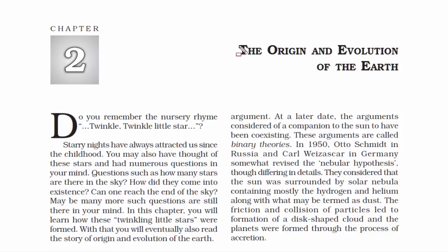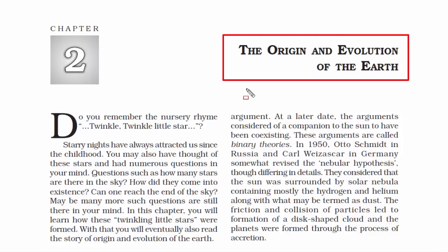This video is about chapter 2, the origin and evolution of Earth. In this chapter we will read about the story of the origin, that is the formation of Earth, and evolution, that is how Earth evolved over time, meaning what were the physical changes that the Earth went through.